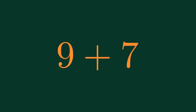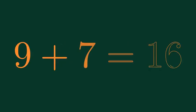What is 9 plus 7? 9 plus 7 is equal to 16.